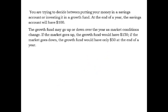Here is an example. You are trying to decide between putting your money in a savings account or investing it in a growth fund. At the end of a year, the savings account will have $100. The growth fund may go up or down over the year as market conditions change. If the market goes up, the growth fund would have $150; if the market goes down, it would have only $50. The growth fund is uncertain.